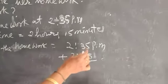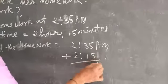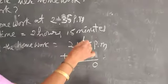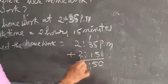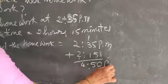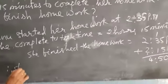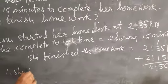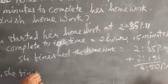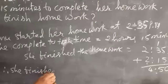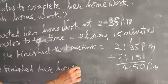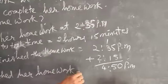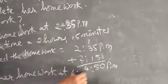Then we will add. 5 plus 5 is 10, carry 1. 1 plus 3 is 4, 4 plus 1 is 5. 2 plus 2 is 4. So 4 hours 50 minutes — therefore she finished her homework at 4.50 pm.